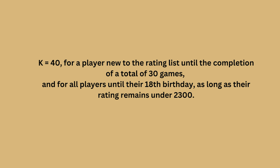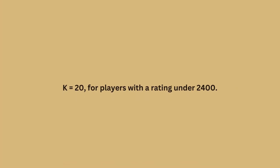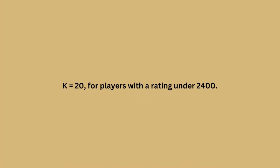So for kids, it's very easy for the rating to go up if they do well, because K would be 40 until they are 18 years old. Once you turn 18 and finish your first 30 games, your K would be 20 if you are under 2400 rating. Most players fall under this category.